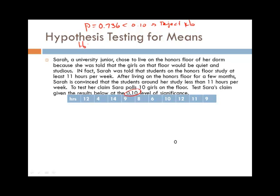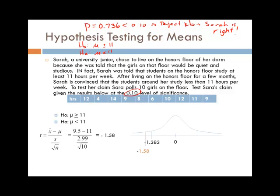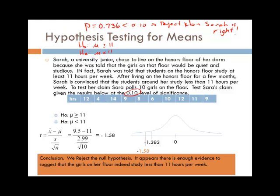So we would reject the null hypothesis. But the null hypothesis said that the mean was at least 11 hours per week, and her claim was that the mean was less than 11 hours. So it looks like Sarah's right, based on the 10 people that she polled. It appears that there is enough evidence to suggest that the girls indeed study less than 11 hours per week.